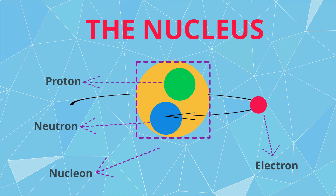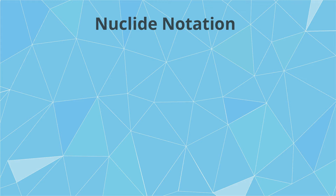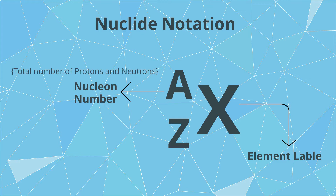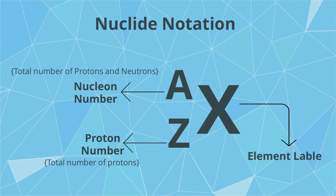Next is the nuclide notation. It consists of three things: two numbers — one on top and one at the bottom — and a letter. The letter represents the symbol of the element. The top number shows the nucleon number, and the bottom number represents the number of protons. Proton number Z is defined as the number of protons in a nucleus, while the nucleon number A is defined as the total number of protons and neutrons in a nucleus. This is also known as the mass number.